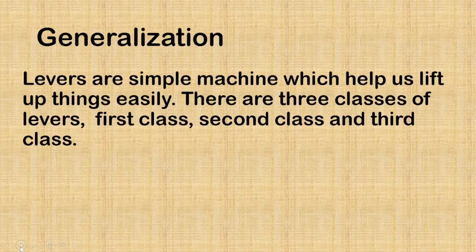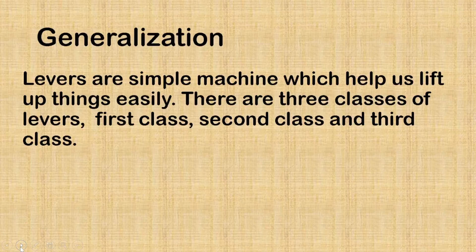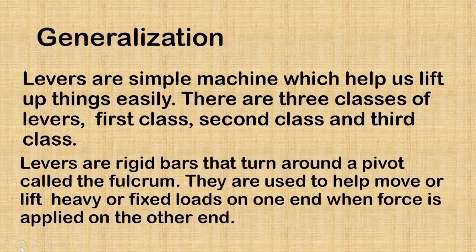What is the lesson that we've learned today? Here is our generalization. Levers are simple machines which help us lift up things easily. There are three classes of levers: first-class, second-class, and third-class. Levers are rigid bars that turn around a pivot called the fulcrum. They are used to help move or lift a heavy or fixed load on one end when force is applied on the other end.